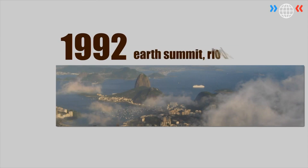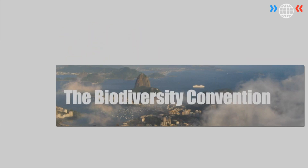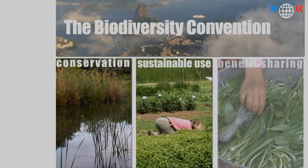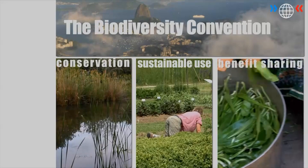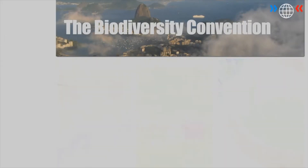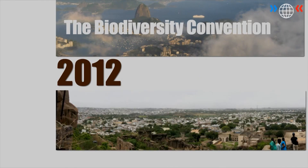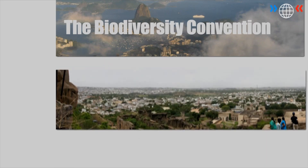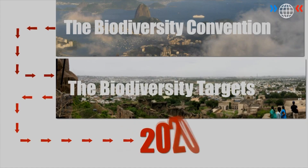In 1992, delegates from 192 countries gathered at the Earth Summit in Rio de Janeiro. A convention was signed. Its main goals are the conservation of biological diversity, the sustainable use of its components and the fair and equitable sharing of the benefits from the use of genetic resources. In October 2012, all member states to the Convention on Biological Diversity will meet again in India. They already agreed on 20 aims to support biodiversity — the so-called biodiversity targets — to be met by 2020.